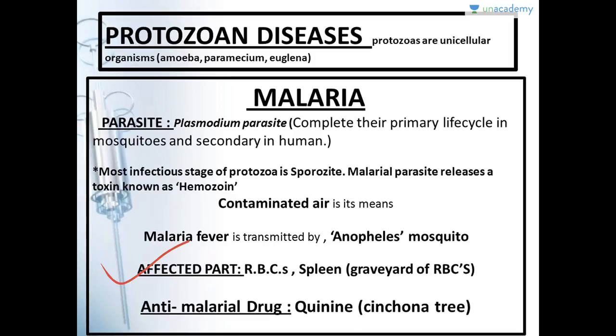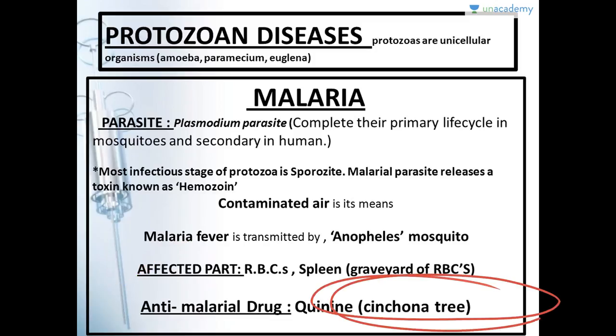The antimalarial drug given to prevent malaria is quinine, and it is obtained from the bark of the cinchona tree.